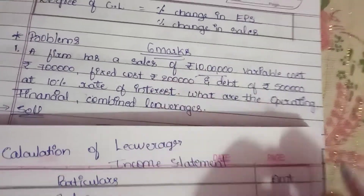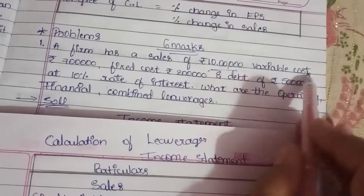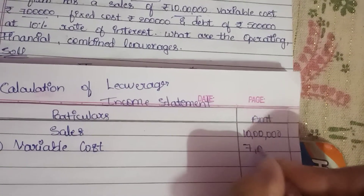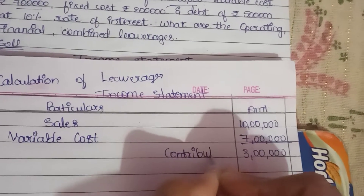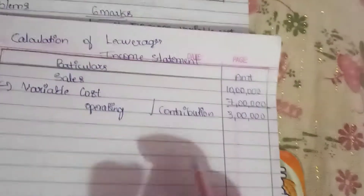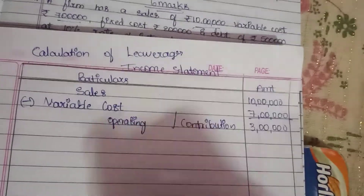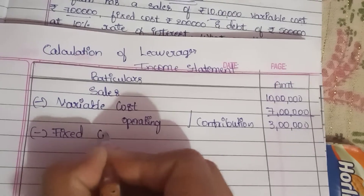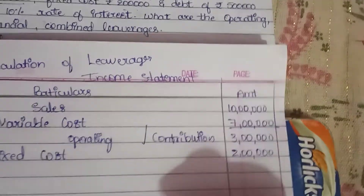First, we need sales. Sales is 10 lakhs. Less variable cost of 7 lakhs. So contribution is 3 lakhs. Next, according to format: Contribution less fixed cost. Fixed cost is 2 lakhs. So 3 lakhs minus 2 lakhs equals 1 lakh.